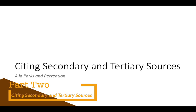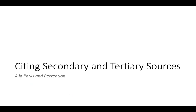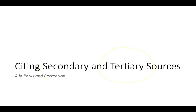Now that we know why to cite, let's start looking at how to cite things according to the Chicago Manual of Style. We're going to begin with secondary and tertiary sources, because if you learn the forms for those, you'll know the foundation of pretty much all citations in Chicago style. It's best to learn these first and then move to primary sources next.